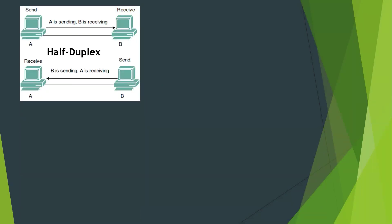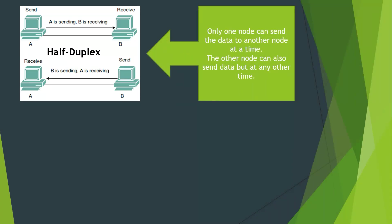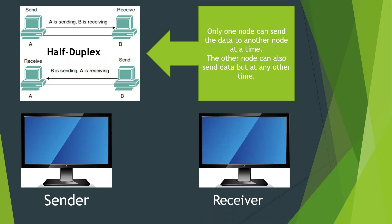In half duplex mode, only one node can send data to another node at a time. Both nodes can send data to each other, but not simultaneously. When the sender is sending data, the receiver can only receive it and cannot reply at the same time. At any other time, the receiver can become the sender and send data back.